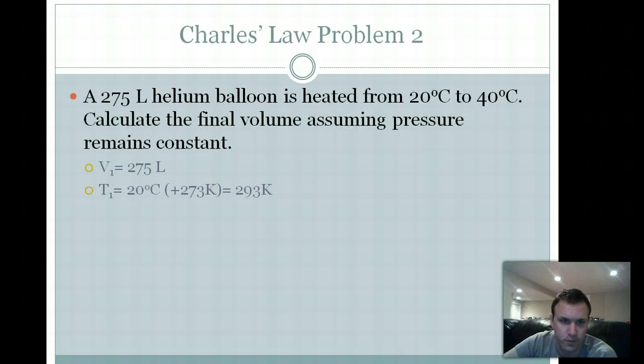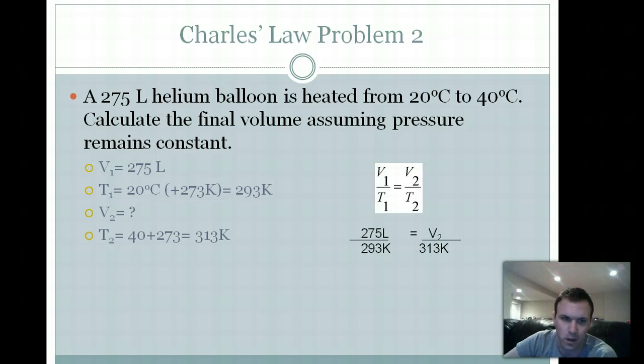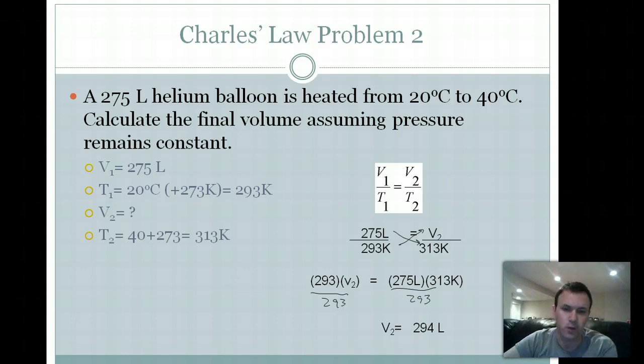Here's another problem. 275 liters, 293 K, 313 substituted in. All right, again, just as before, in order to solve out this answer, cross multiply, cross multiply, and solve out for your second volume. So this side, you'll divide both sides by 293, and you get 294 liters. And it goes up as it should because your temperature goes up.